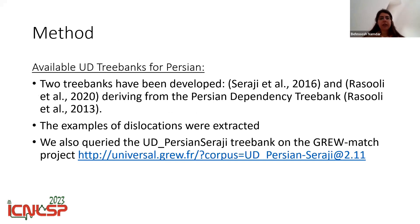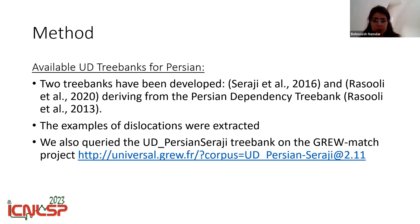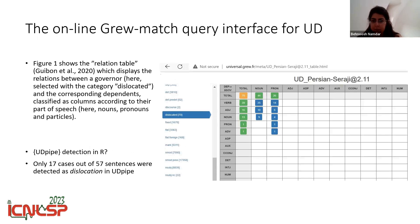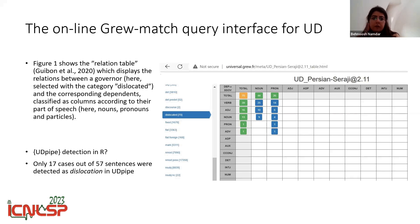For our methodology, we built a challenge set based on available Universal Dependency treebanks for Persian by Seraji and Rasuli. We also used the GroomMatch platform — thanks to the GroomMatch project. As you can see, this is a screenshot of the platform. You can easily see the relationship table which displays the relation between a governor. We chose 'dislocated' because we want to extract examples of dislocations.